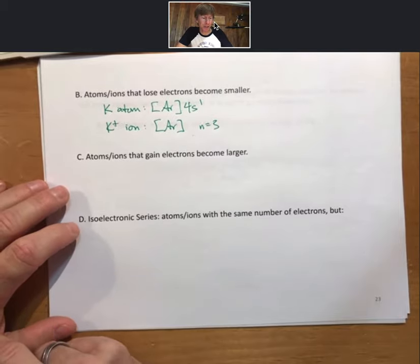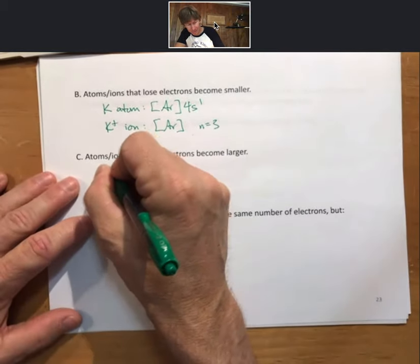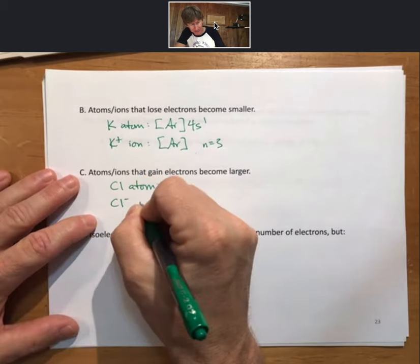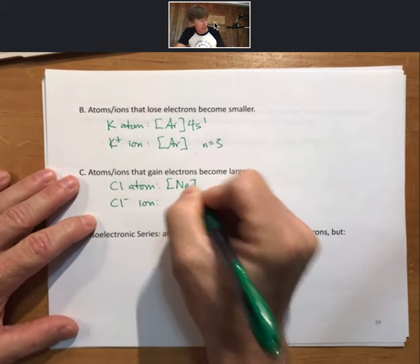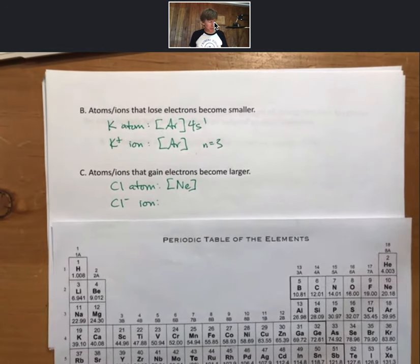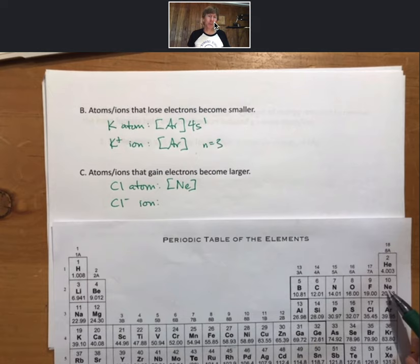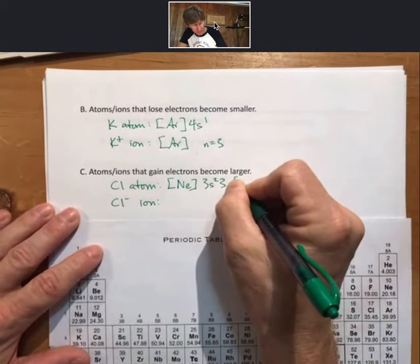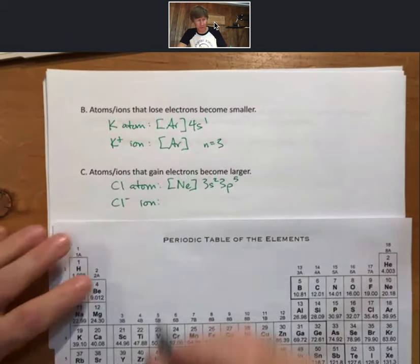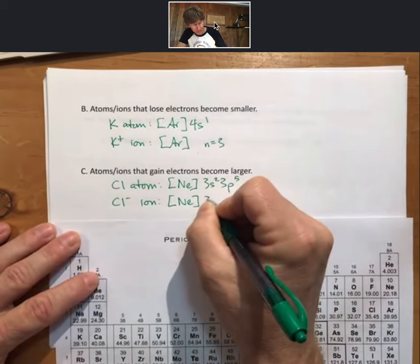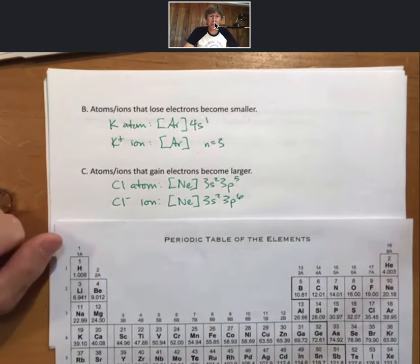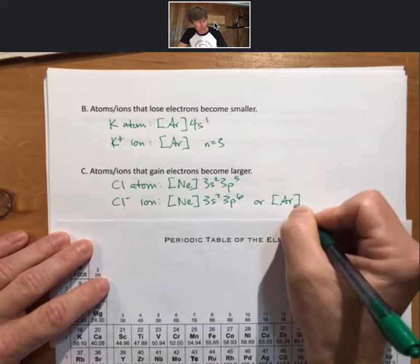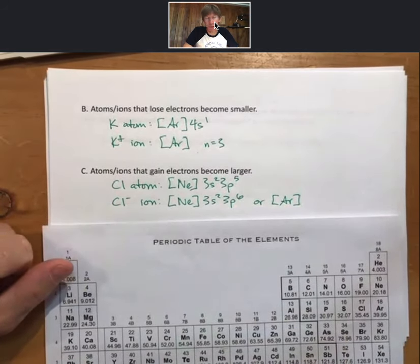Atoms, ions that gain electrons become larger. It's a little bit harder to see, but let's talk about it. And the example I want to give is a chlorine atom versus a chloride ion. Looking at chlorine's position on the periodic table, we go backwards to find the noble gas core for neon, then 3s2, 3p5. While chloride ion gains 1 electron, it has 8 valence electrons, same valence electrons as argon. So you could also write it just as a noble gas core for argon. Either way works.